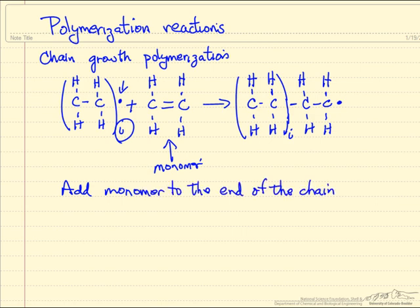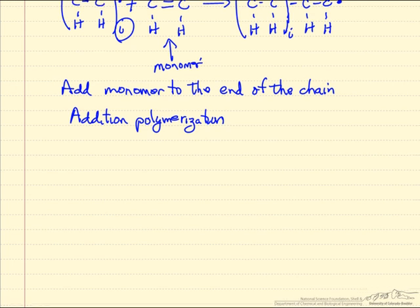We sequentially add these monomers, and what I'm showing you is an example of free radical chain growth polymerization. It's also referred to as addition because we continue to add a monomer unit onto the growing polymer chain. Now there are other types of reactions besides just free radical addition polymerization, but we'll just concentrate on this example for now.